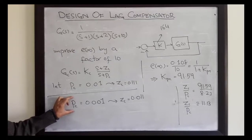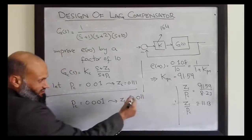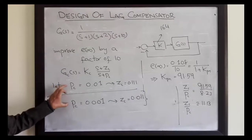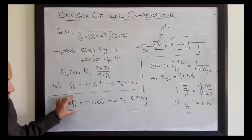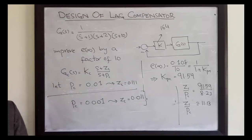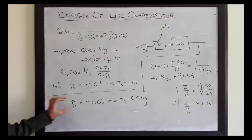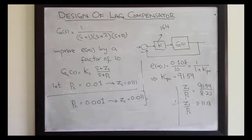The second choice will have less distortion on the transient characteristics but there will be a long tail in the response of the system. To summarize: as far as transient characteristics are concerned, the second choice will have less distortion, while the first will have more distortion. Both give the same steady state improvement. The tail effect will be less significant in the first case. Both controllers will have to be implemented using passive elements — a resistor-capacitor combination. Let's compare both controllers with the help of MATLAB simulations.